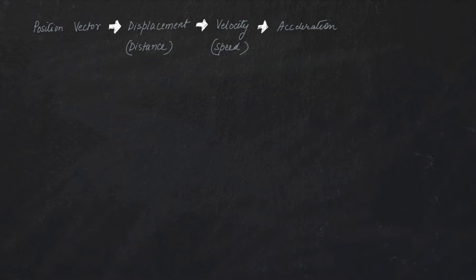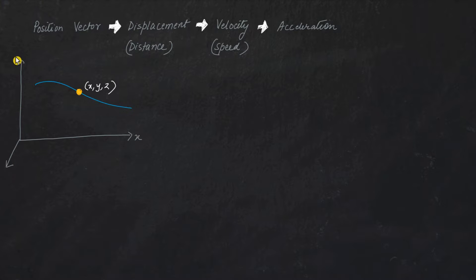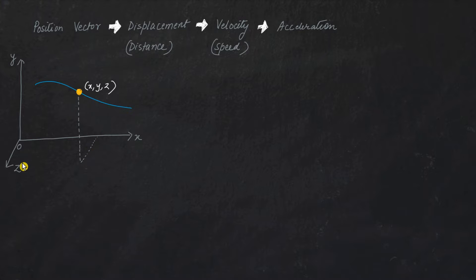The most fundamental of these physical quantities is the position vector. Let's suppose there is a particle moving along a certain trajectory, and at a given point in time it is at a particular location with coordinates x, y, and z. To assign coordinates, we need to define a coordinate system. The most common one is the Cartesian coordinate frame of reference — the rectangular Cartesian coordinate frame — which contains three perpendicular axes x, y, and z all originating at a common origin.